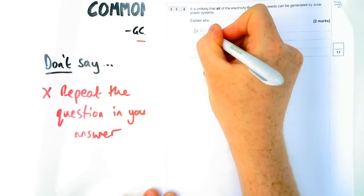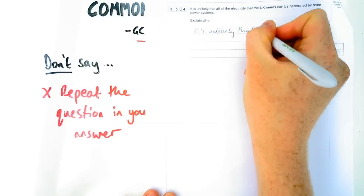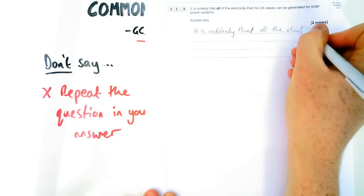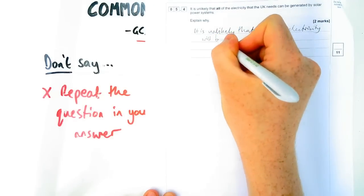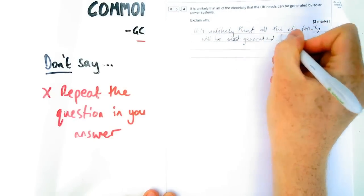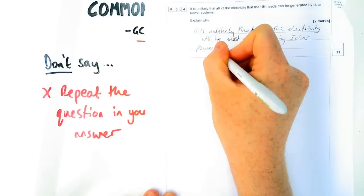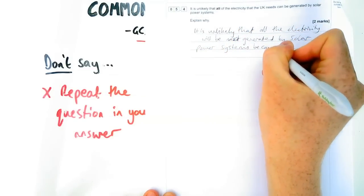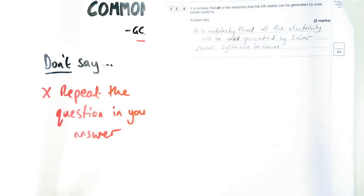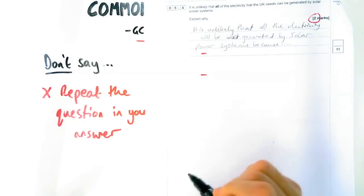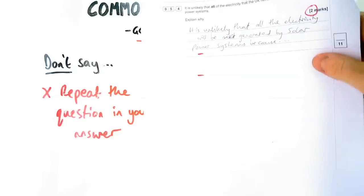So let's look at this question here. It says, it's unlikely all electricity the UK needs can be generated by solar power systems. Explain why. I'm not interested in the context for this question, but just look how much space it takes me to write out the answer if I'm doing it in a full sentence. I haven't even answered the question yet. It's unlikely that all electricity be met by solar power stations because I've only got one line left, but I've got two marks to get.